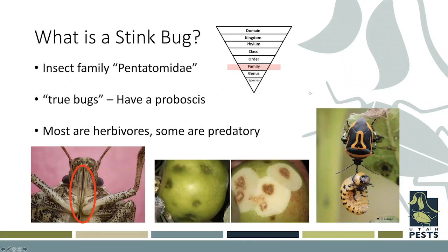A stink bug is essentially a true bug. A true bug is an insect that has a piercing sucking mouthpart, which we can see here on the bottom left of the screen. All stink bugs have piercing sucking mouthparts, just like aphids and other insects that pierce through plant structures and feed on plants.